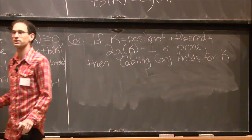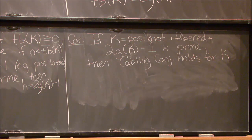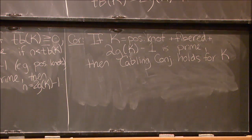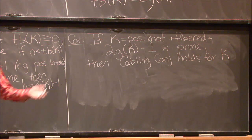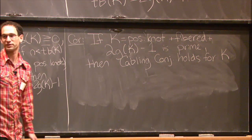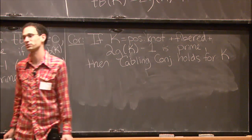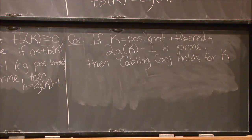This applies to any knot with max TB = 2g − 1, for instance many L-space knots have this property.